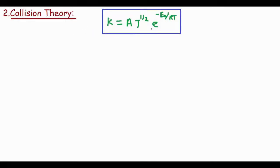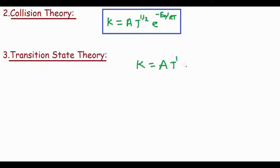The transition state theory says K = A × T^1 × e^(-Ea/RT). You can see the difference: for collision theory it was T^(1/2), but for transition state theory we have T^1. The value of A for collision theory and transition state theory may or may not be the same.